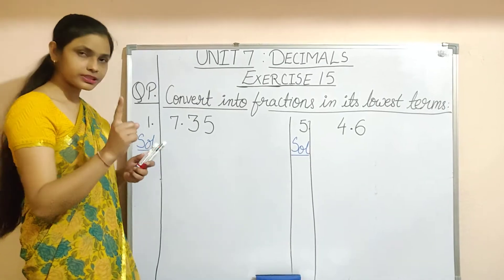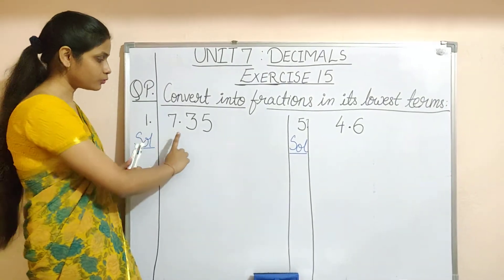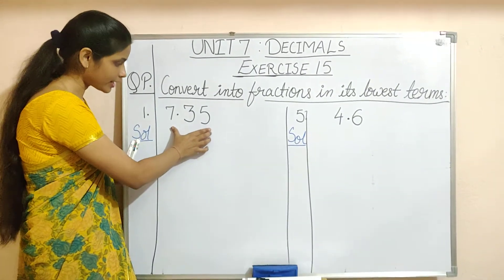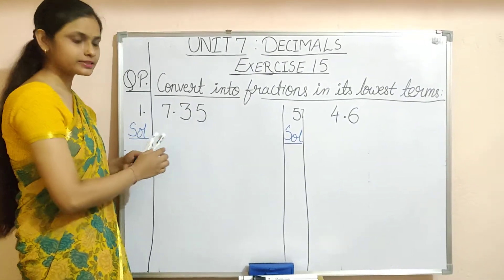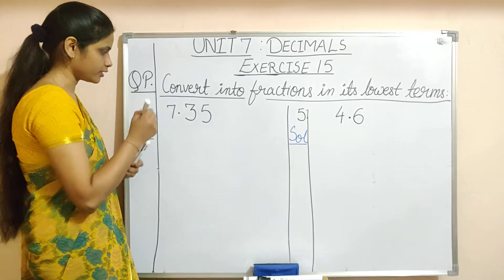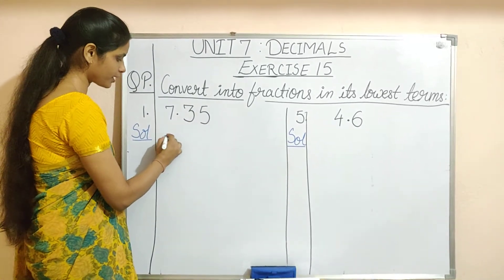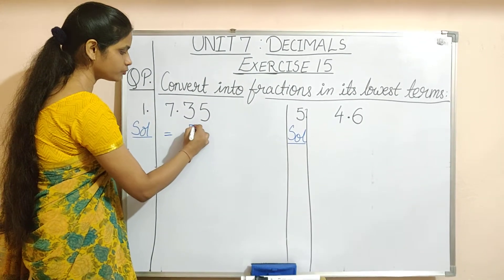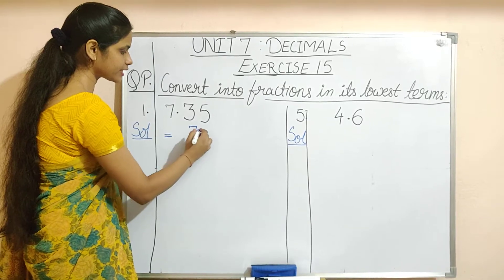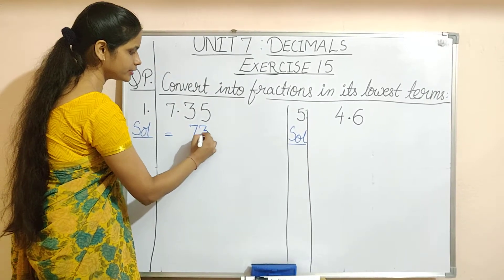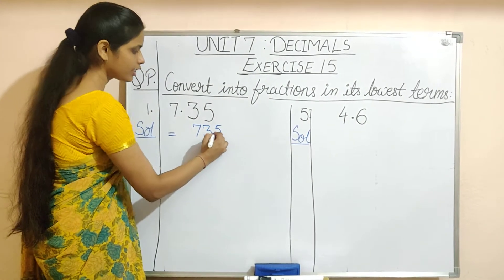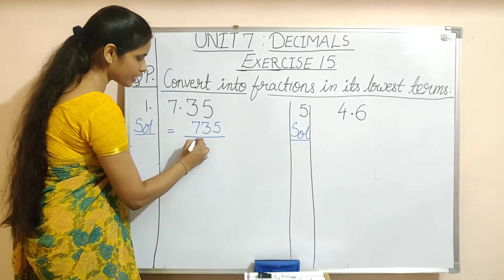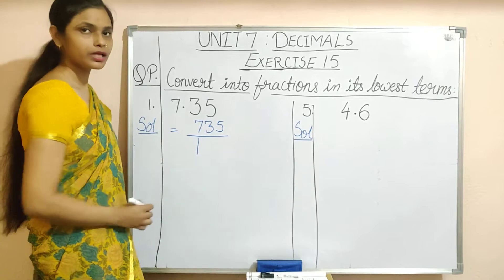First step, remove the decimal number and write the number as the numerator. So 7.35, after removing the decimal, you will write it as 735. Then in the denominator, you will write 1.